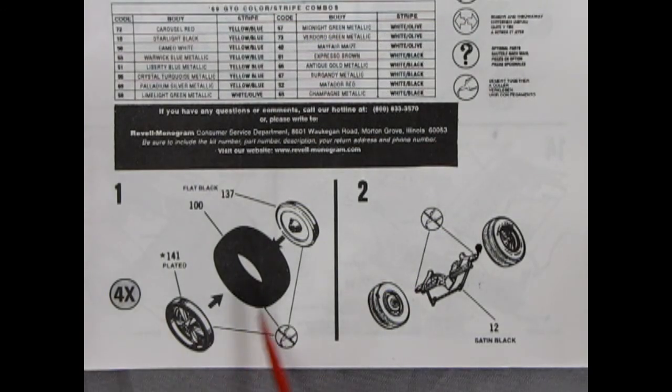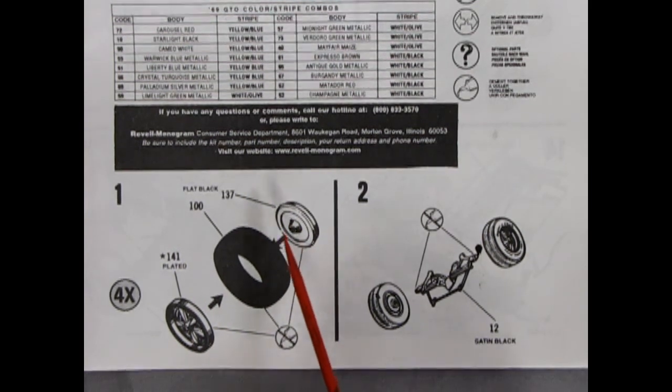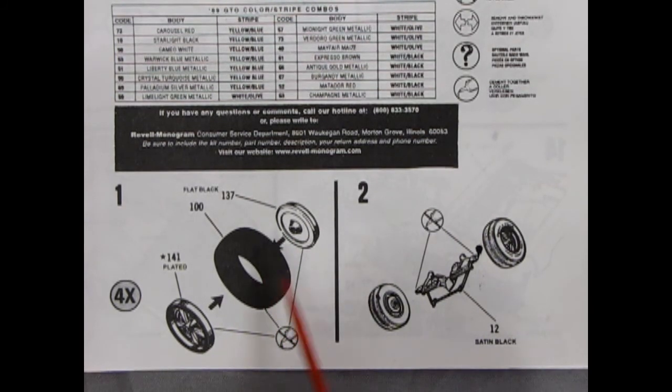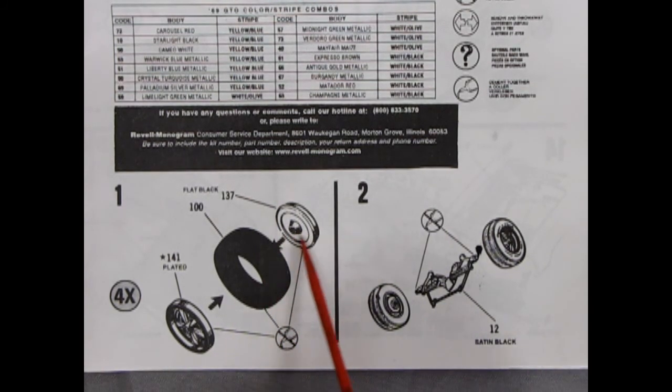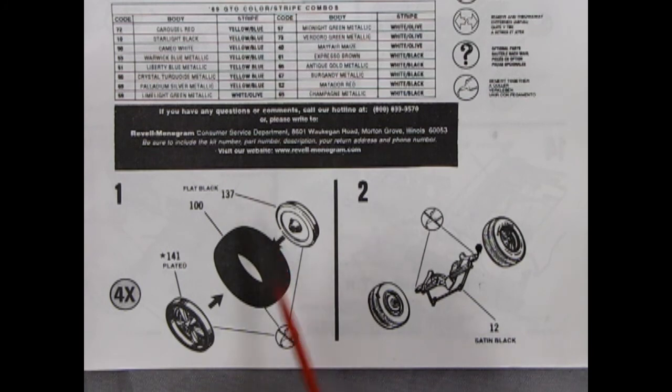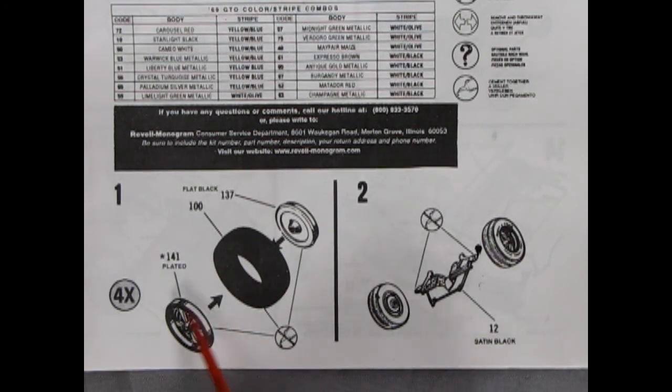Alright so step one shows our three-piece wheels going together. And you got a wheel back that clicks in on the axles much like the typical monogram style kits. So remember to get this done right because you only have one chance to click it on the car. And then after that if you messed up there's no way to get the wheel off. So then we've got our tire going in here. And then our front wheels which look kind of like the Magnum 500 style.